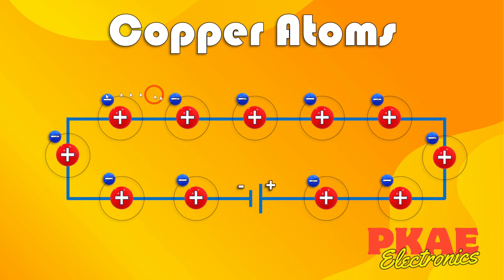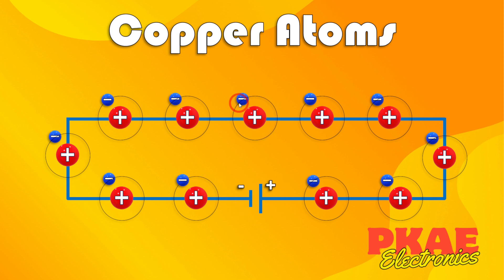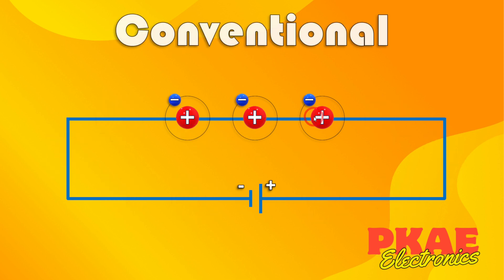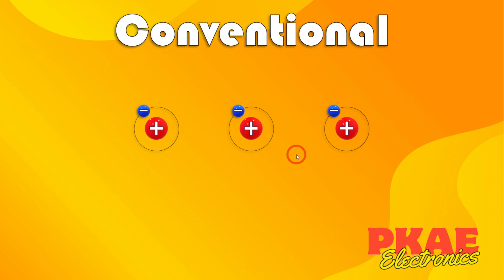The electrons are indeed flowing from the negative to the positive terminal, and that's what people call the electron current flow. This basically means when you have a circuit with a supply, these electrons — which were previously just floating around randomly — actually flow in the same direction towards the positive terminal. Let's look at this a different way by zooming into three atoms here just to make it simple to follow.